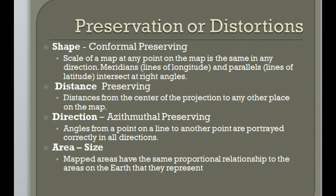Different maps preserve different things. A conformal map would preserve the shape. There's maps that preserve distance. Azimuthal maps preserve directions, and there's maps that preserve the sides and the area.